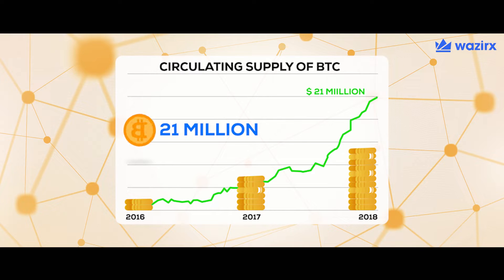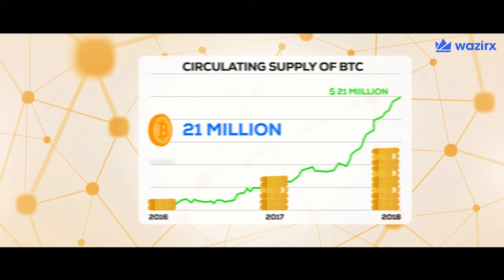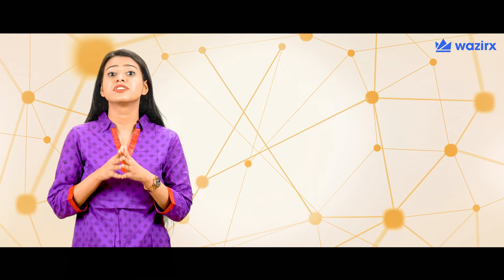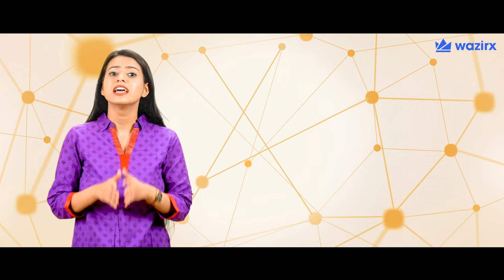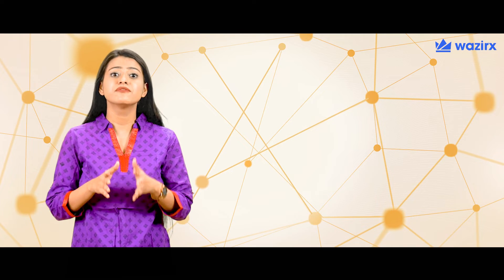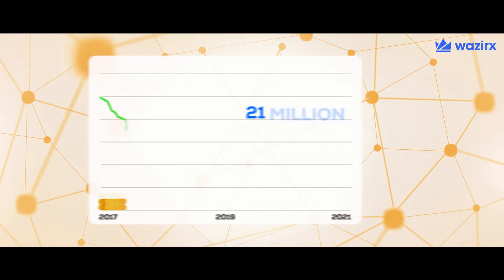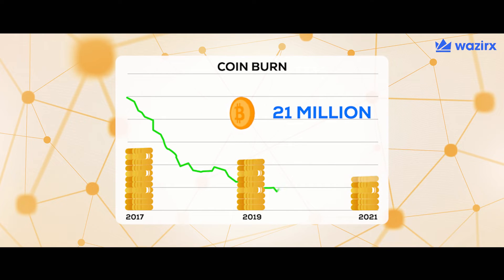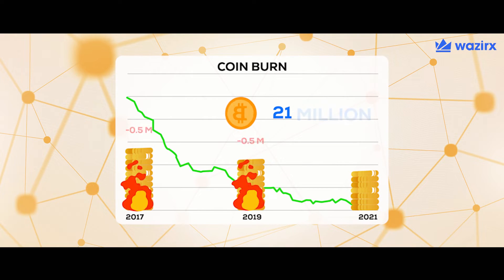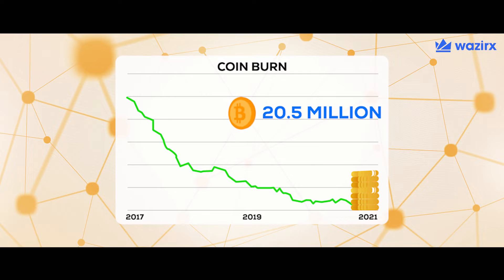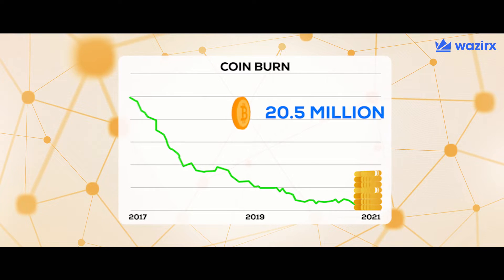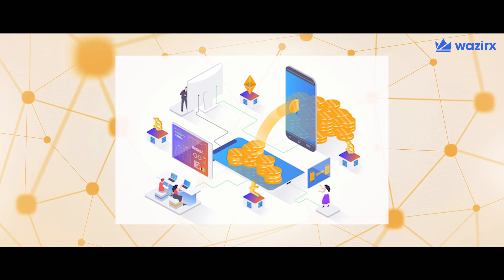For example, the circulating supply of Bitcoin will gradually increase until the max supply of 21 million coins is reached. Such a gradual increase is related to the process of mining, which generates new coins every 10 minutes on average. Alternatively, coin burn events, like those performed by Binance, cause a decrease in the circulating supply, permanently removing coins from the market.